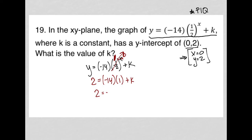When I simplify, I get 2 equals negative 14 plus k. I can add 14 to both sides here, and you can already see the answer. 16 is equal to k. The question wants to know the value of k. It is 16.